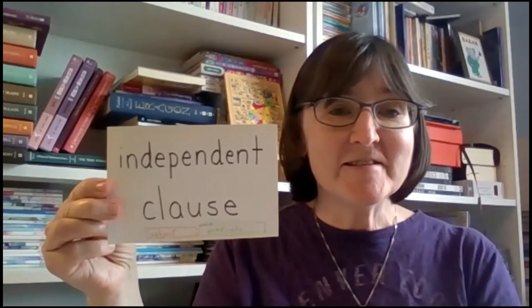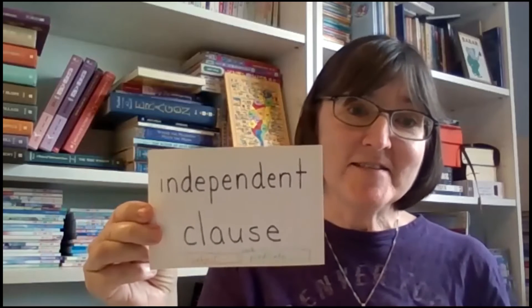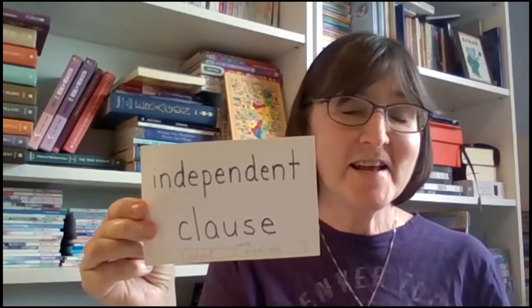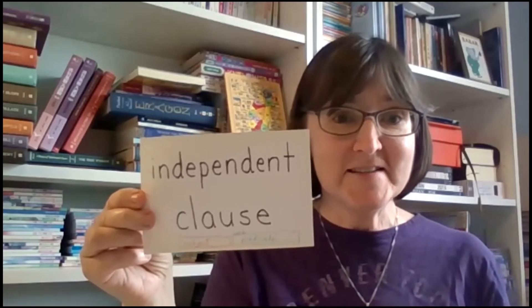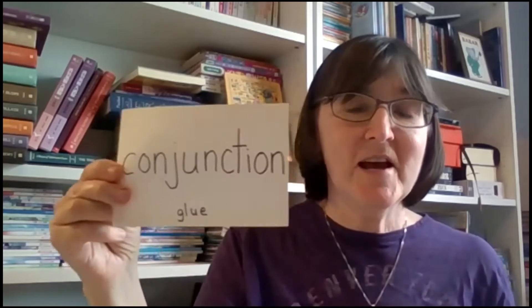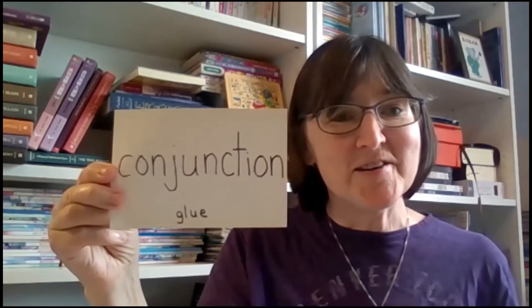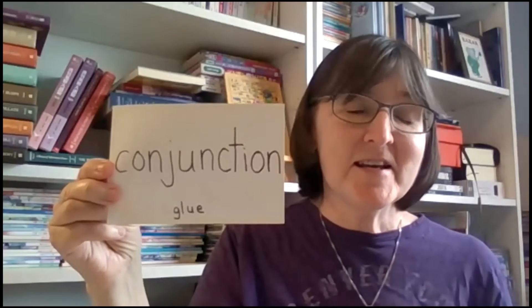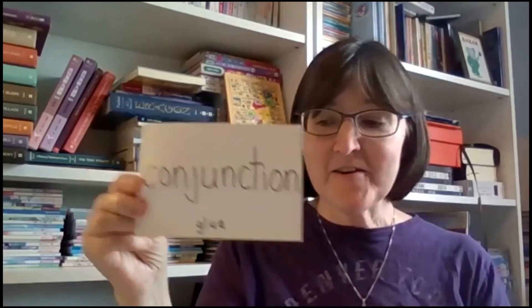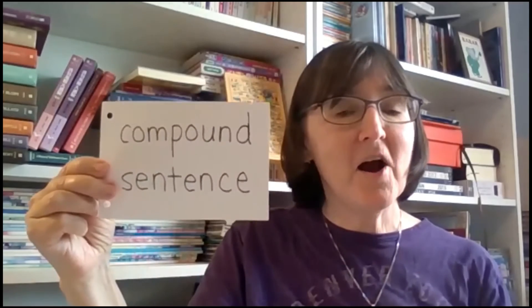An independent clause can be a sentence all by itself. Independent means it doesn't need anything else — it can be all by itself. So 'I jump into the pool' is an independent clause. I can combine independent clauses — I can take two independent clauses and combine them into one long sentence. If I do that, I need to use a conjunction.